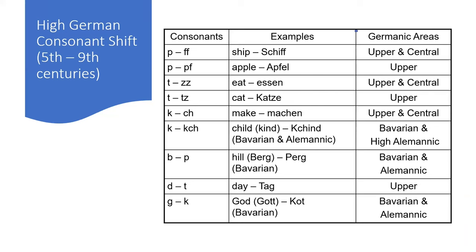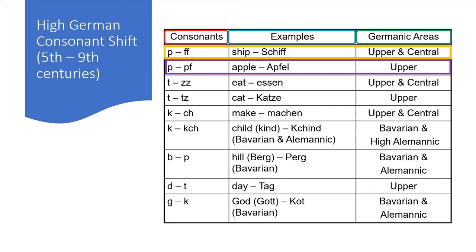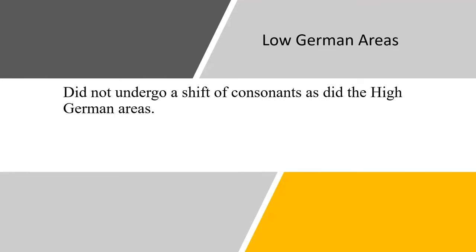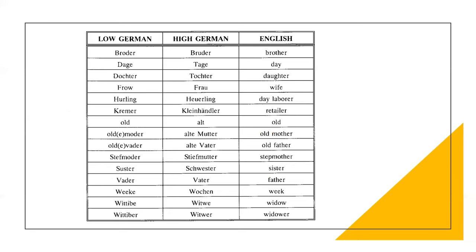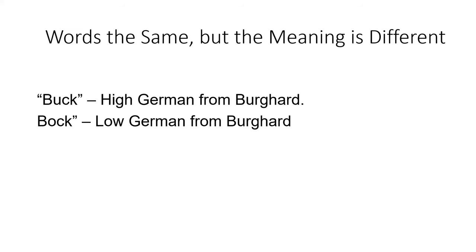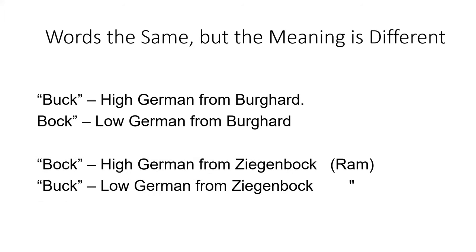This chart shows that the High German area made a consonant shift. The first column shows the consonants and how they shifted, the second column gives examples, and the third column identifies the Germanic areas. For example, the consonant P became a double F, as in the change of the word ship to shift, and the P also became a PF, as in the change of the word apple to Opfel in the upper area. Low German areas did not undergo a shift of consonants. This chart gives a comparison between Low German, High German, and English, indicating that words can be the same but the meaning is different. For example, Böck in High German means Burkhard, and Böck in Low German means Ziegenböck, or a ram.